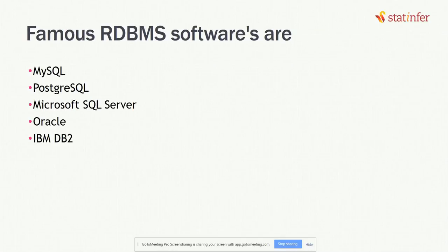There are several famous RDBMS software options. The most famous are MySQL, PostgreSQL, and Microsoft SQL Server. Microsoft SQL Server is one of the most well-known commercial paid software options. MySQL is the most famous open-source software. Others include Oracle and IBM DB2. Today we are going to learn MySQL. SQL coding across any RDBMS software is almost the same, with very minor changes — the software can be different but the SQL is nearly identical.